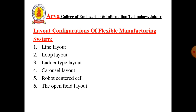Layout configuration of Flexible Manufacturing System. The objective is to shorten the throughput time and reduce resource requirements, which includes avoiding deadlock in materials flow, decreasing in-process inventory, balancing the workload of all machines, and making good use of bottleneck devices. This includes seven types: line layout, loop layout, ladder layout, carousel layout, robot center cell, and open field layout.